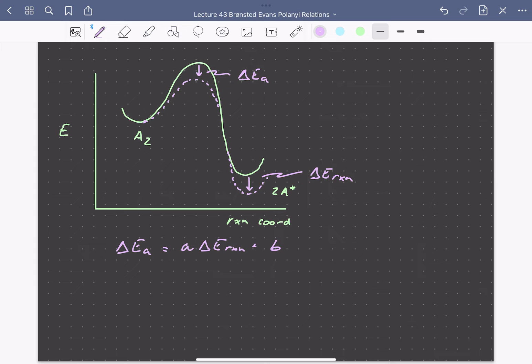The magnitude of the slope of this BEP relationship reflects how much the transition state resembles the product state versus the reactant state. A slope close to 1 implies the transition state is very similar to the product state, so its energy changes just like the product.